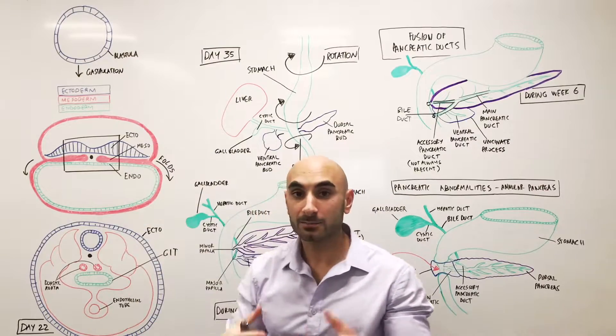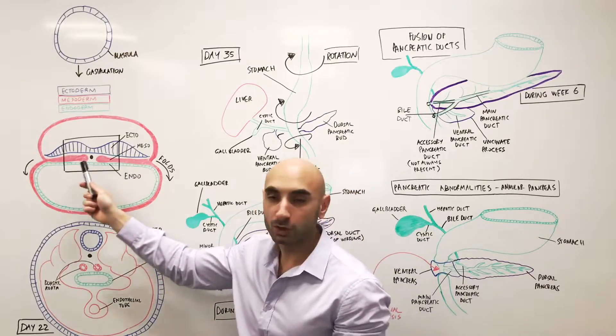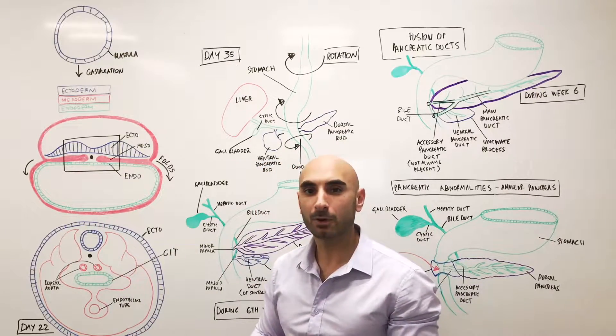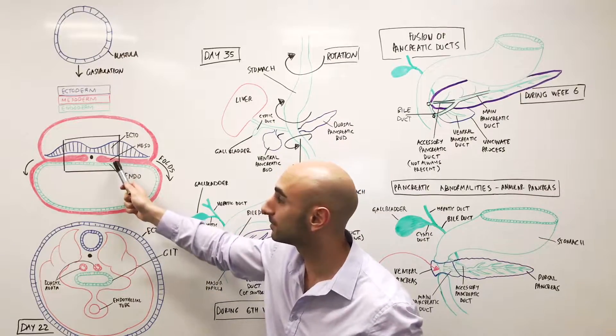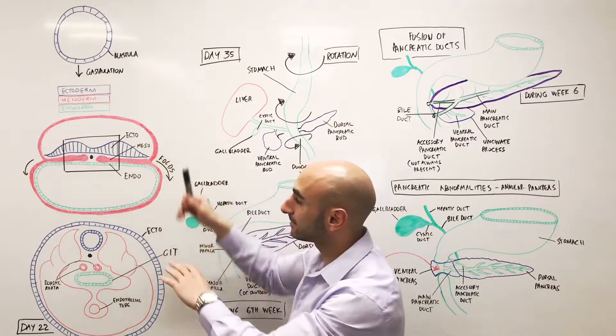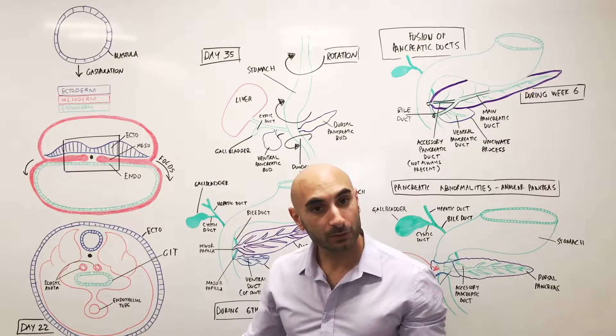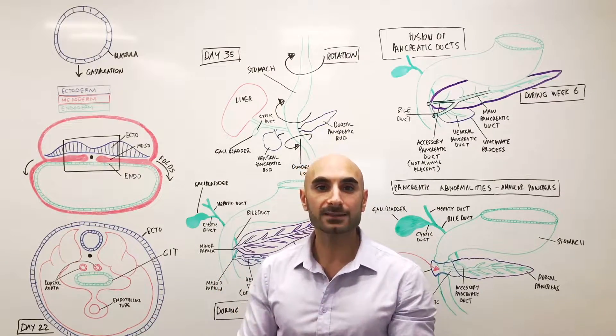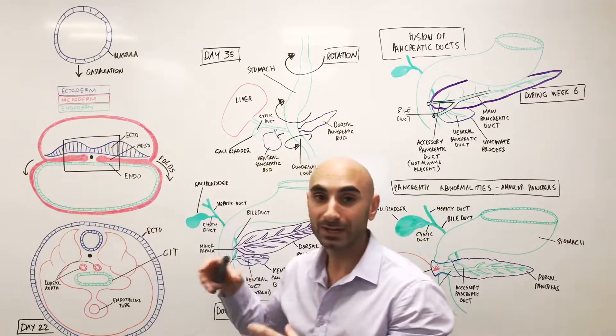Your ectoderm will become your skin as it folds around and your central nervous system. The mesoderm becomes a lot of things. They're made up of other parts as well. So you have your paraxial mesoderm, intermediate mesoderm and your lateral plates. They become things like muscles, heart, etc. We'll save that for another video because today's focus is on endoderm, the green, your inner.